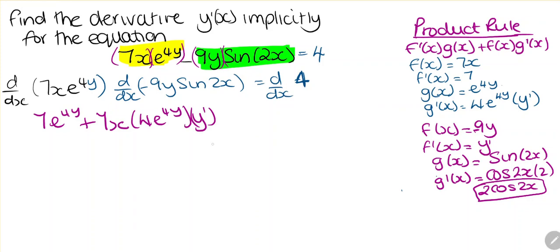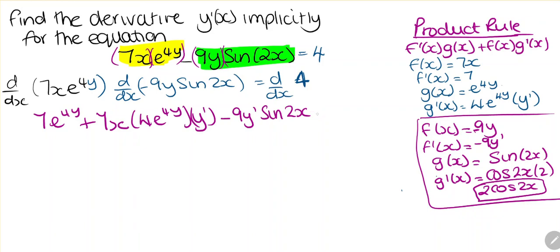For the next term, we're going to write minus 9y prime multiplied by g(x), which is sine of 2x. Then plus f(x) — but since it's the second term we're looking at, this is minus — so it's going to be minus 9y multiplied by 2 cosine of 2x.